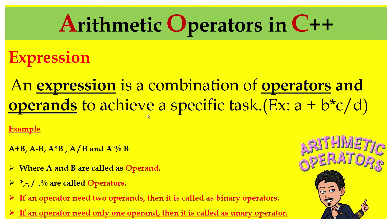For example, we have an expression A plus B multiplied by C divided by D. In this expression, A, B, C and D are called as operands, and plus, multiplication and division are called as operators.